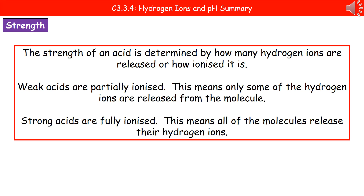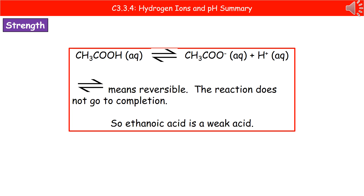If we take the example of a weak acid, they are what's called partially ionized. That tells us that only some of the hydrogen ions have been released from the molecule. A strong acid, however, is what's called fully ionized — all of the molecules have released their hydrogen ions. If we take a look at a weak acid, we've got ethanoic acid. When ethanoic acid is in aqueous solution, some of those hydrogen ions will be released, but not all of them. So it's a weak acid because it's only partially ionized — only some of the hydrogen ions have been released from the ethanoic acid molecule.